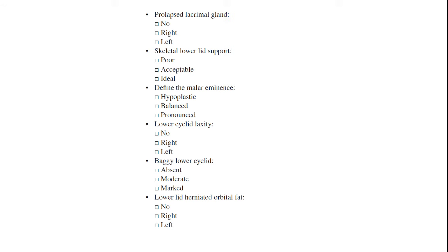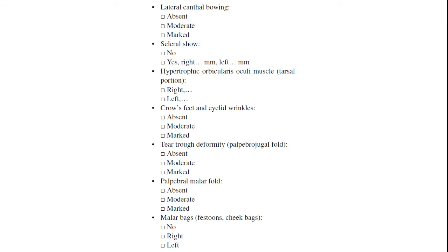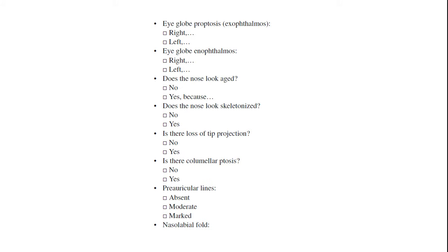Lower eyelid laxity: no, right, or left. Baggy lower eyelid: absent, moderate, or marked. Lower eyelid herniated orbital fat: no, right, or left. Lateral canthal bowing: absent, moderate, or marked. Scleral show: no or yes. Hypertrophic orbicularis oculi muscle: right or left. Crow's feet and eyelid wrinkles: absent, moderate, or marked. Tear trough deformity: absent, moderate, or marked. Palpebral mala fold: absent, moderate, or marked. Mala bags: no, right, or left. Eye globe proptosis (exophthalmos): right or left. Eye globe enophthalmos: right or left.